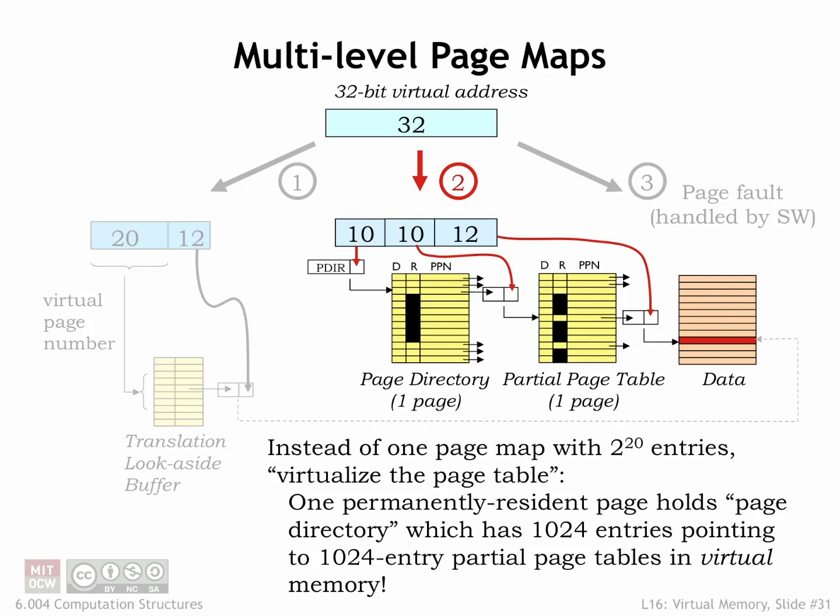There are a few MMU implementation details we can tweak for more efficiency or functionality. In our simple page map implementation, the full page map occupies some number of physical pages. Using the numbers shown here, if each page map entry occupies one word of main memory, we'd need 2 to the 20th words or 2 to the 10th pages to hold the page table. If we have multiple contexts, we would need multiple page tables, and the demands on our physical memory resources would start to get large.